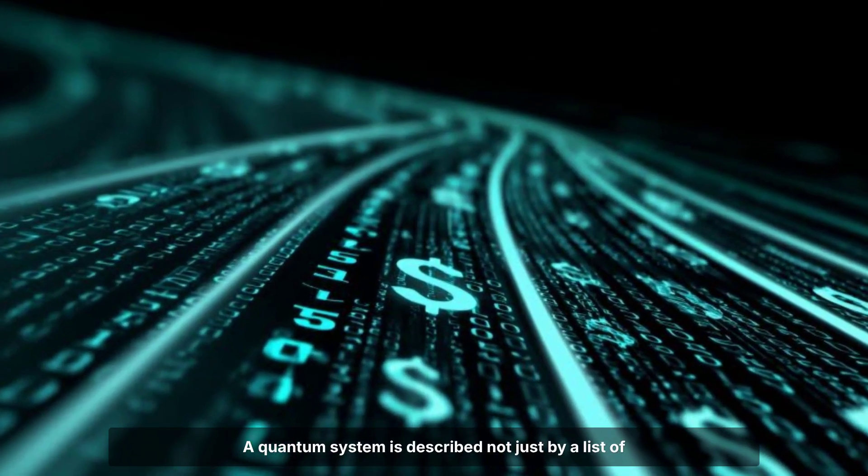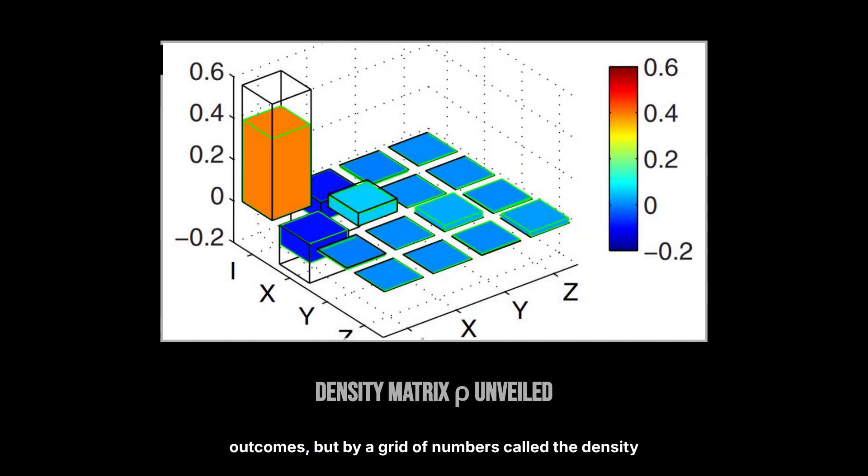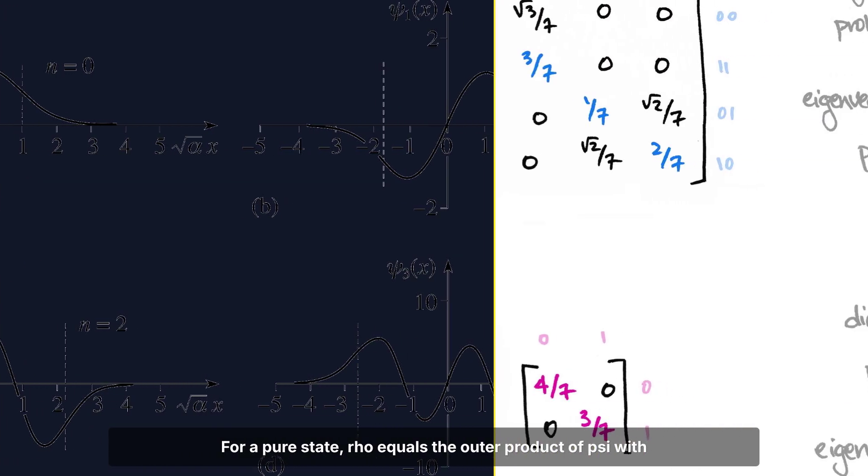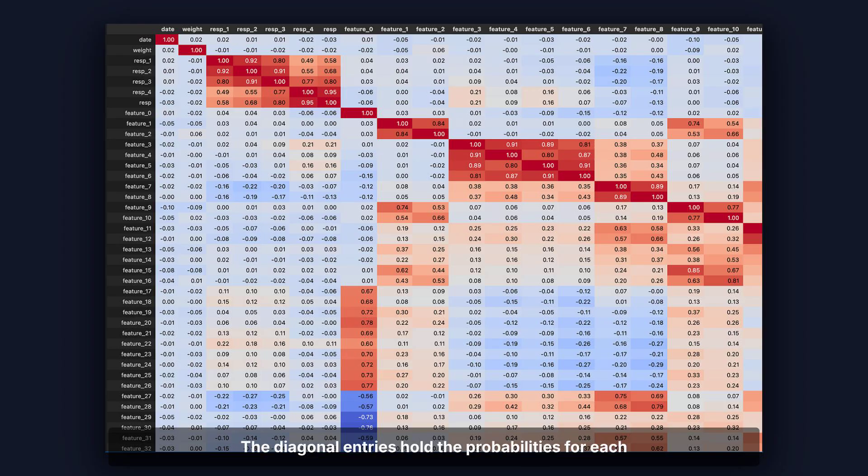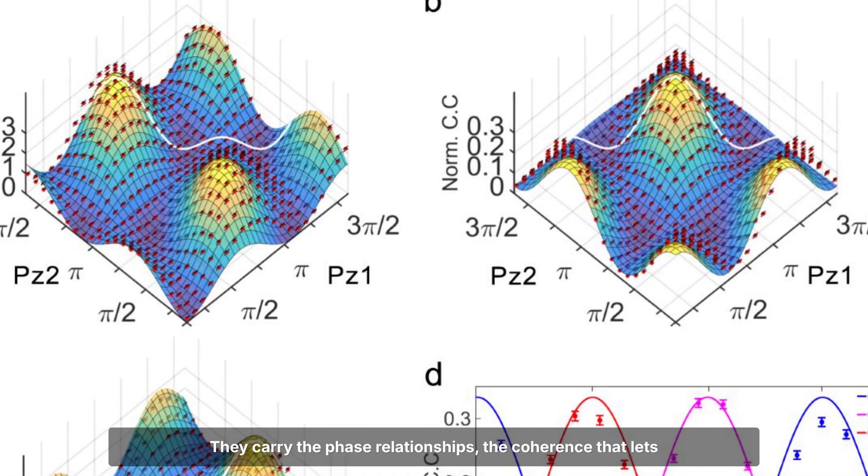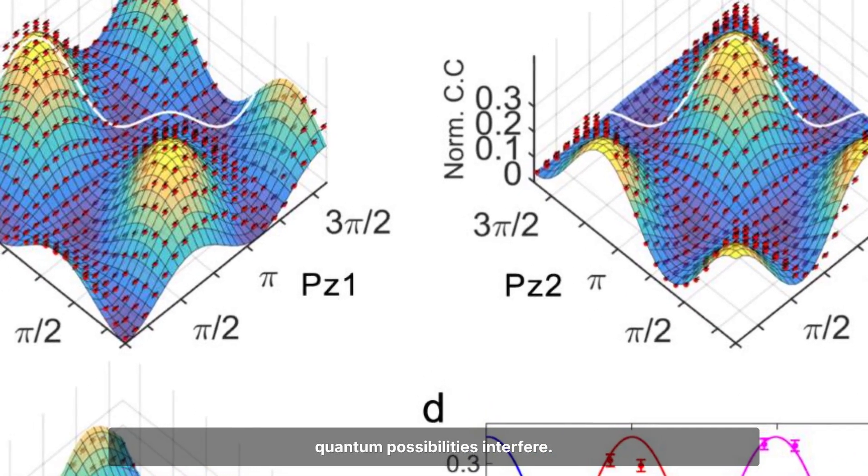A quantum system is described not just by a list of outcomes, but by a grid of numbers called the density matrix. For a pure state, ρ equals the outer product of ψ with itself. The diagonal entries hold the probabilities for each outcome. The off-diagonal entries are the secret keepers. They carry the phase relationships, the coherence that lets quantum possibilities interfere.